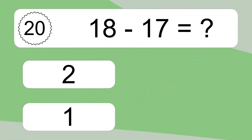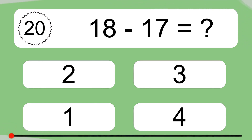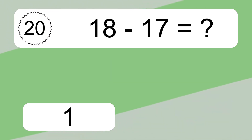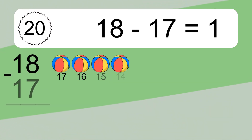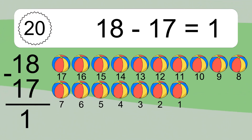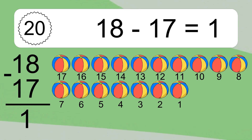18 minus 17 equals what? 18 minus 17 equals 1. Let's count it: 17, 16, 15, 14, 13, 12, 11, 10, 9, 8, 7, 6, 5, 4, 3, 2, 1.